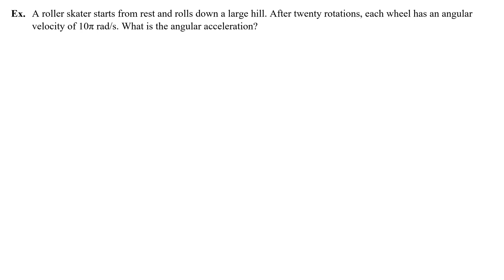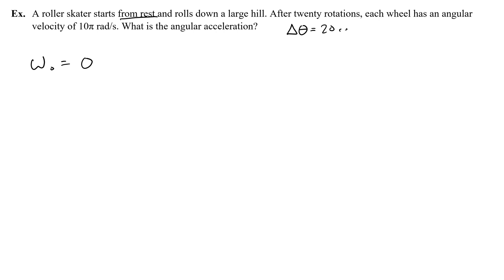A roller skater starts from rest and rolls down a large hill. After 20 rotations, each wheel has an angular velocity of 10 pi radians per second. What is the angular acceleration? Let's start with the givens. We know they start from rest, so the initial angular velocity omega-naught is zero. After 20 rotations — we can call that the angular displacement of 20 revolutions.